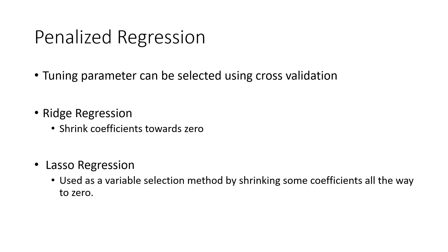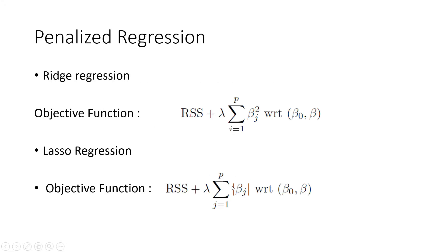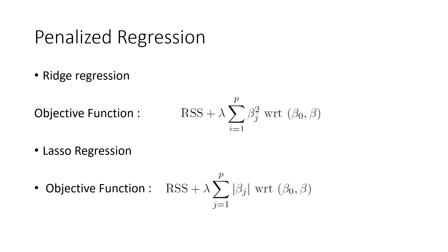In ridge regression, by fitting the model, it will shrink some coefficients towards 0 but not exactly to 0. With the L1 norm in lasso regression, what happens is that it will shrink some of these coefficients all the way to exactly 0. Because of that, we can use lasso regression as a variable selection method. So an additional advantage of lasso compared to ridge regression is that lasso regression can be used as a variable selection method.